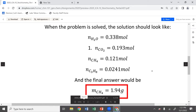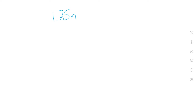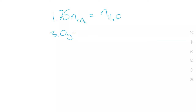So water equals 1.75 times CO₂. And we have the equation: 3.0 grams equals 16.0 times moles of methane plus — is it 44? The molecular weight of propane is 44. Those are just the molecular weights written without units to condense it a little bit.